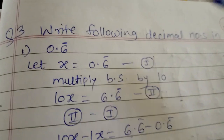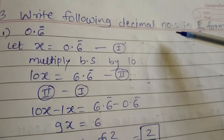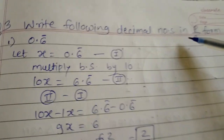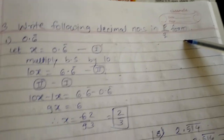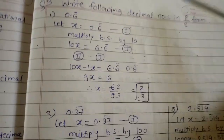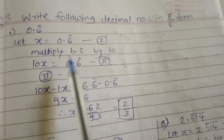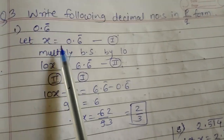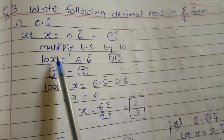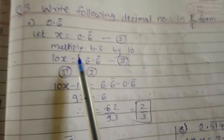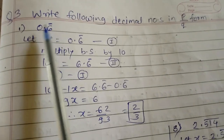Next, we are going to see question number 3. The question says: write the following decimal numbers in p upon q form. These are the most important examples in this chapter.